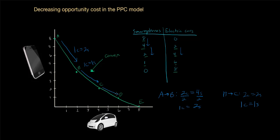Now let's look between points C and D. As the country moves from C to D, it gains two more cars and it gives up only one smartphone. So two cars cost one smartphone. Dividing both sides by two, one car costs one half of a smartphone. The cost of a car has decreased yet again.